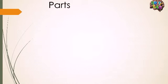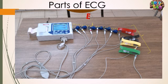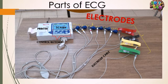Now let's see the parts of the ECG machine. These are the electrodes — the ones placed on the patient's skin. Here is the screen; below the screen are the control buttons, and there is the printer of the ECG. These are the electrode cables.